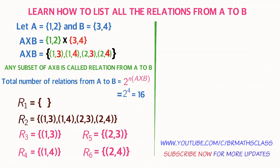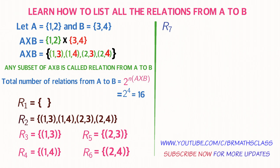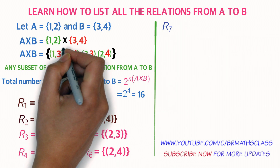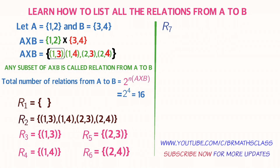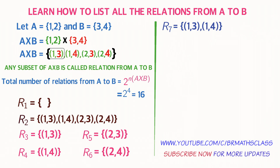Now I will write all subsets of A cross B which contain two elements. R7, the seventh relation: observe A cross B and take the first element, ordered pair (1,3). Then move to the right — the next element after (1,3) is ordered pair (1,4). So R7 equals the set containing ordered pair (1,3) and ordered pair (1,4).